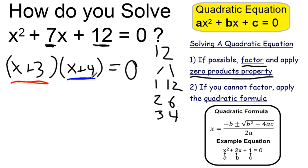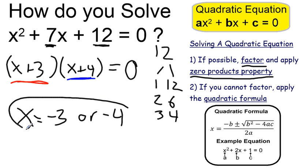Looking at my first one, I know that x plus 3 is equal to zero if x is equal to negative 3. And x plus 4 equals zero if x is equal to negative 4. So my two solutions are negative 3 and negative 4.